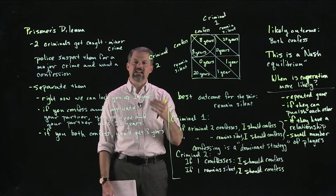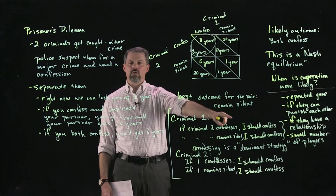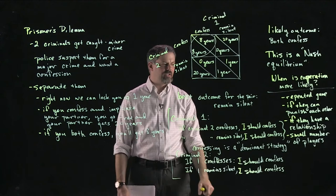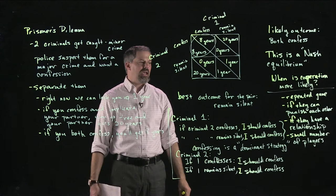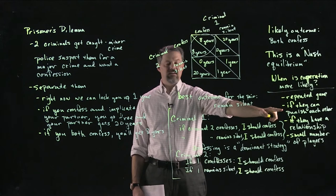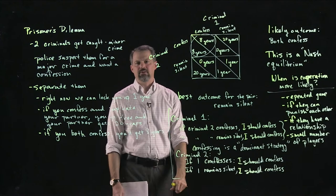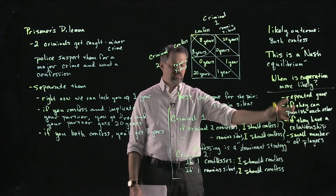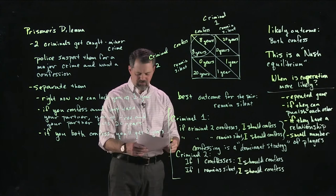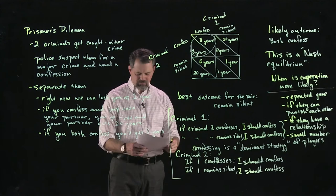Successful criminal organizations have aspects of all these conditions: they emphasize the family nature of the organization, they don't hesitate to punish each other, it's a repeated game, and they keep a small number of people involved in any specific crime. So there are times when we observe cooperation, but it's not that likely — a lot of times we observe confessing.